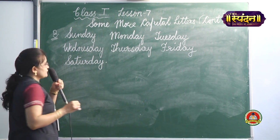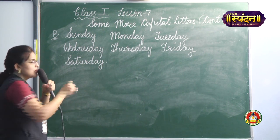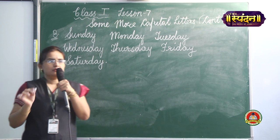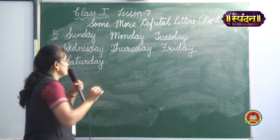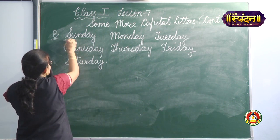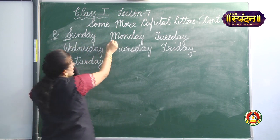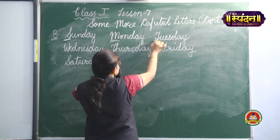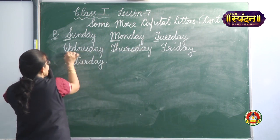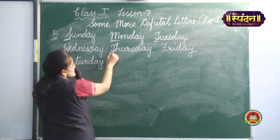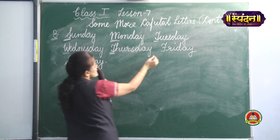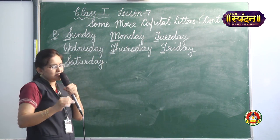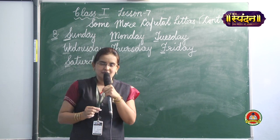So children, you have to remember that names of the days of the week will always be in capital. Sunday's S will be in capital, Monday's M will be in capital, Tuesday's T will be in capital, Wednesday's W will be in capital, Thursday's T will be in capital, Friday's F will be in capital, and Saturday's S will be in capitals.